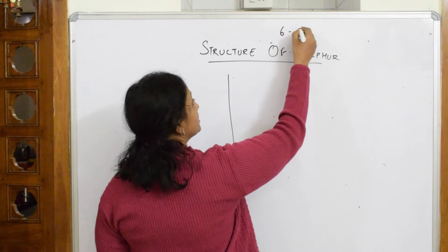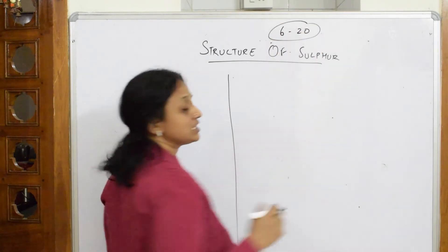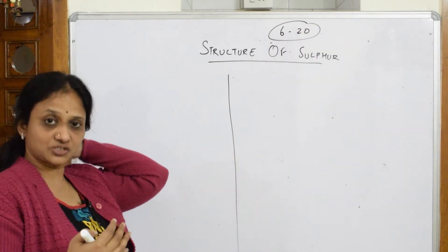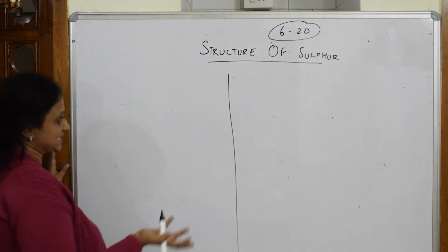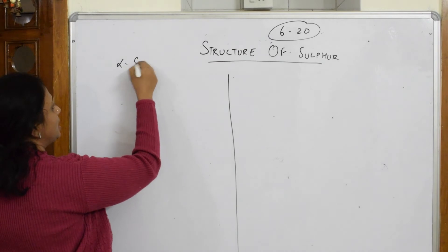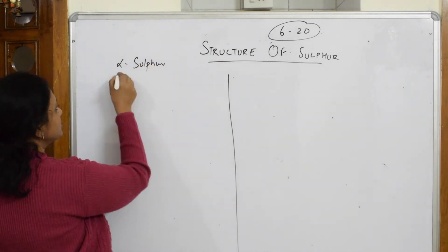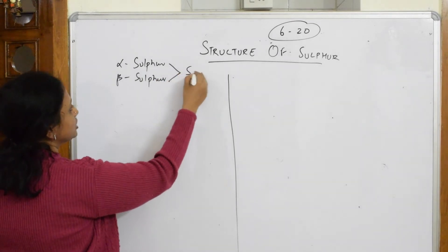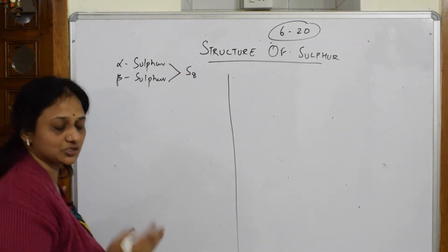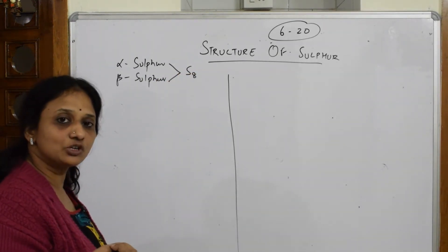6 to 20 combinations of 6 to 20 sulfur atom structures have been already synthesized. When I have to speak about your S8 molecule, first important thing: alpha sulfur, that is the rhombic, and beta sulfur both have S8 molecules present in the structure.